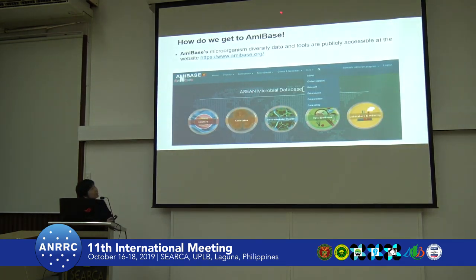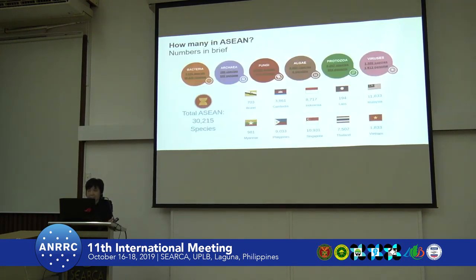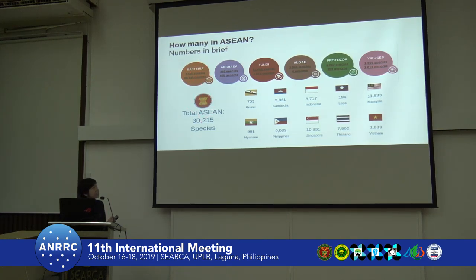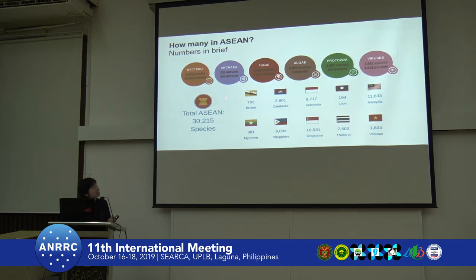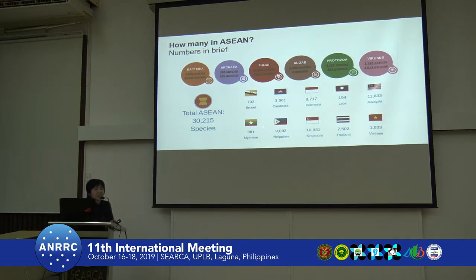This is the website — the URL that you can access for the database. This slide shows a summary of each type of microorganism and how many species we found in Asia. There are about 9,000 species for bacteria, and we can see that we have 3,000 species from Cambodia, even though we don't know if Cambodia has a cultural collection. We can still find microbial diversity data from Cambodia.